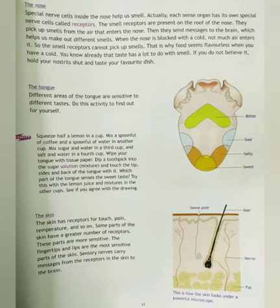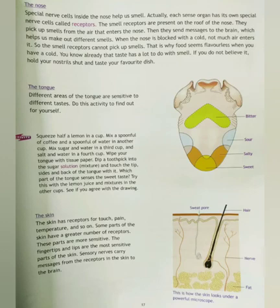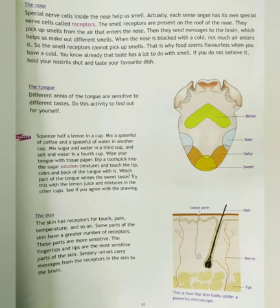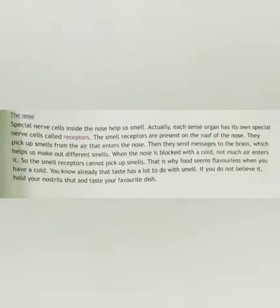Last, we are going to learn about the nose, tongue and skin. Special nerve cells inside the nose help us to smell — these cells are called receptors and they are present in the roof of the nose. They pick up smells from the air that enters the nose and send these messages to the brain, which helps us identify different smells.